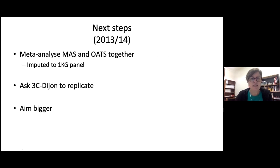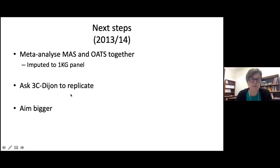In 2013 and 2014, we meta-analyzed MAS and OATS together and imputed both studies to the 1000 Genomes Reference Panel. We got some genome-wide significant hits. The next thing to do is replicate — you can't publish anymore with just genome-wide significant hits in one meta-analysis. We asked people in France with a study called 3C Dijon to replicate for us, and we weren't able to replicate.